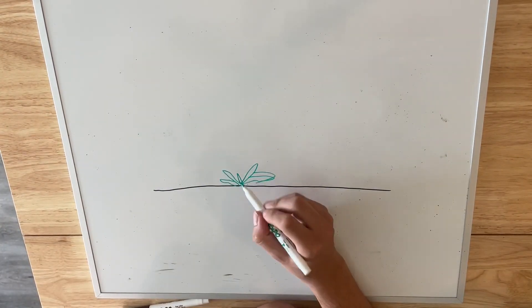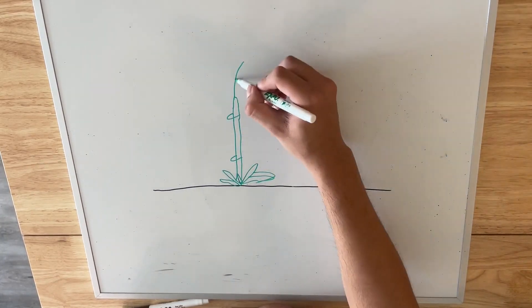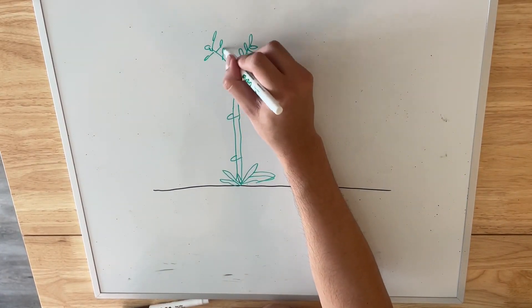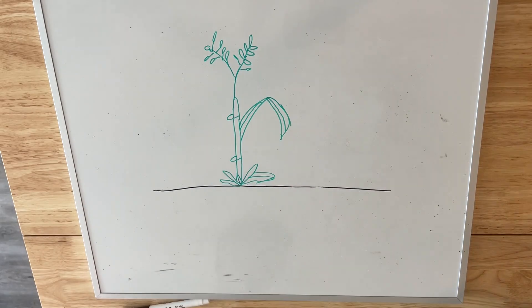Many grasses have their growing points below ground, so herbivores and animals that graze and mow the tops of these grasses will not kill the plant as the growing point is already below the soil.